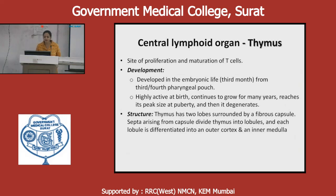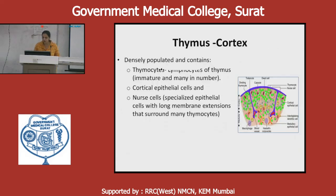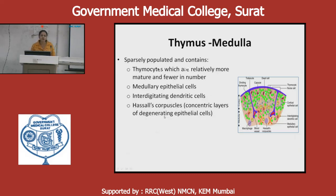The thymus has two lobes surrounded by a fibrous capsule. Septa arising from the capsule divide the thymus into lobules, and each lobule is differentiated into an inner medulla and outer cortex. In the cortex there are thymocytes, cortical epithelial cells, and nurse cells — specialized epithelial cells with long membrane extensions that surround many thymocytes. The medulla is sparsely populated with cells, having fewer thymocytes. It contains medullary epithelial cells, interdigitating dendritic cells, and Hassall's corpuscles, which are concentric layers of degenerating epithelial cells.